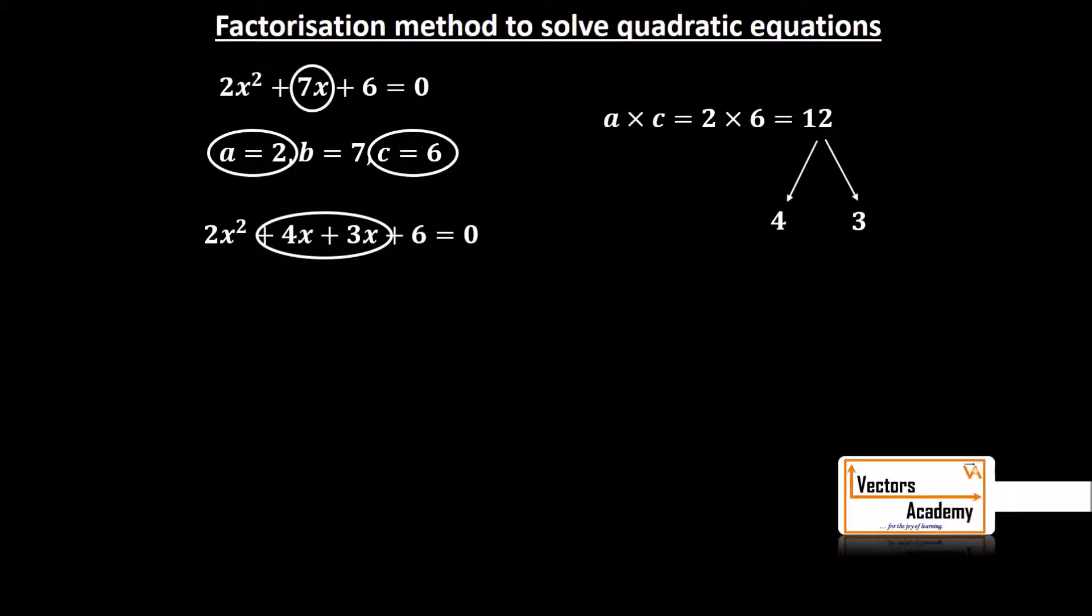Once you have distributed 7 into two parts, now we need to take the first two terms and find out a common factor between them. The first two terms are 2x² and 4x. We can see both are factors of 2 and they also have x in common. So I will take 2x common, I will be left with x + 2. Whereas in the other two terms, I can take 3 common, so I will be left with x + 2 again.